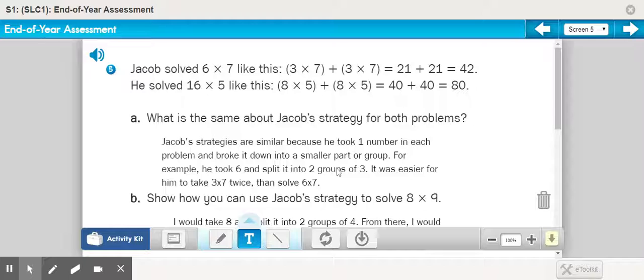And so here I've written my explanation for 5a. I wrote Jacob's strategies are similar because he took one number in each problem and broke it down into a smaller part or group. For example, he took six and split it into two groups of three. It's easy for him to take 3 × 7 twice and solve 6 × 7. And so, yes, I use multiple sentences to describe my answer for 5a, but I think the valuable components of my answer...